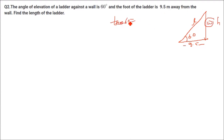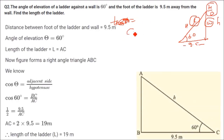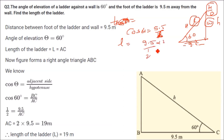We have to find out the length of the ladder. This is the hypotenuse and this is the base, so hypotenuse and base — what trigonometric ratio can we use? We can use the cosine angle. So cos 60 equals base upon hypotenuse, that is 9.5 by L. Cos 60 is half, so L equals 9.5 into 2, which is 19 meters. The length of the ladder is 19 meters.